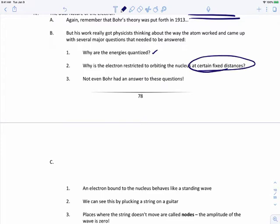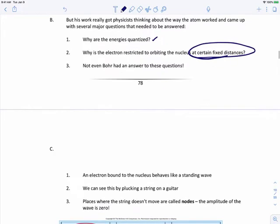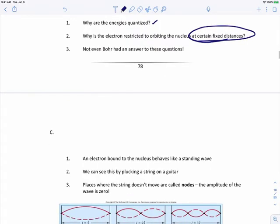This may not seem that big of a deal, but this was a strict and severe restriction that the electron has to be on certain paths. And this is actually going to play a big role going forward. Not even Bohr had the answer to these questions, so there was still some more work that needed to be done.